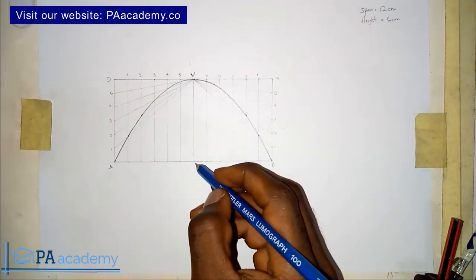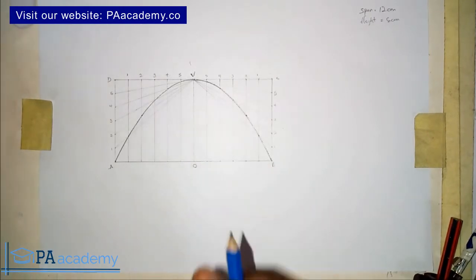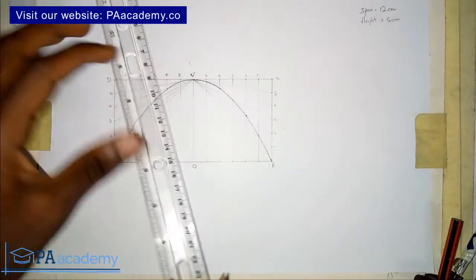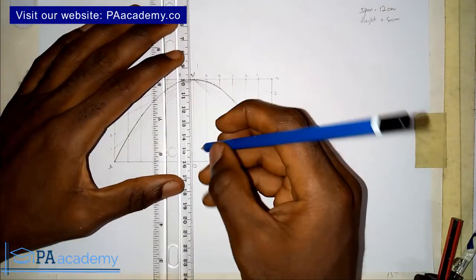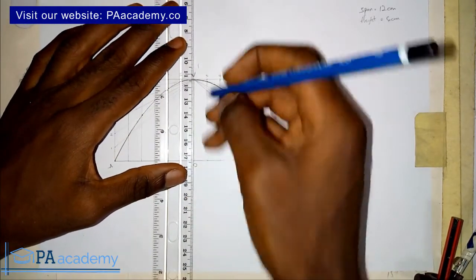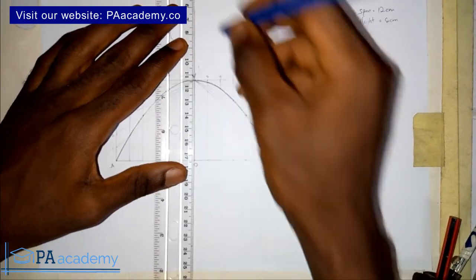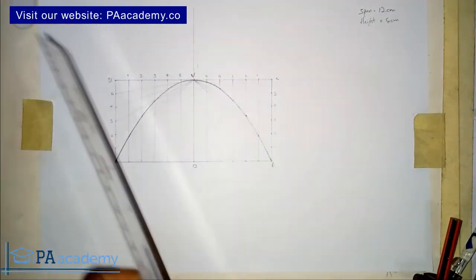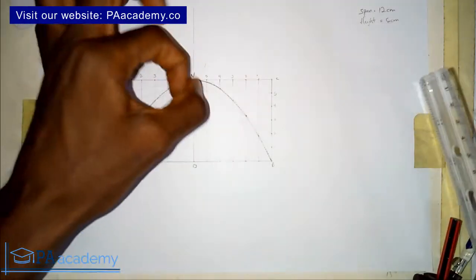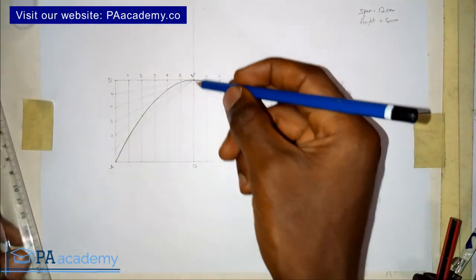Let's call the center of line AB point O. Then this line VO — I would like to extend it to the top. The next thing we are going to do in finding the focus of this parabola is to pick a point on this line VO.